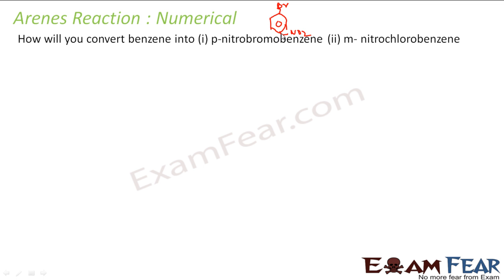If I add the nitro group first, the nitro group is a meta-directing group, so bromine will be added at the meta position. I won't be able to add bromine at the para position. So if I add NO2 first, bromine can only go to the meta position — I won't get the desired compound. So it's better to first add bromine, then add the nitro group.